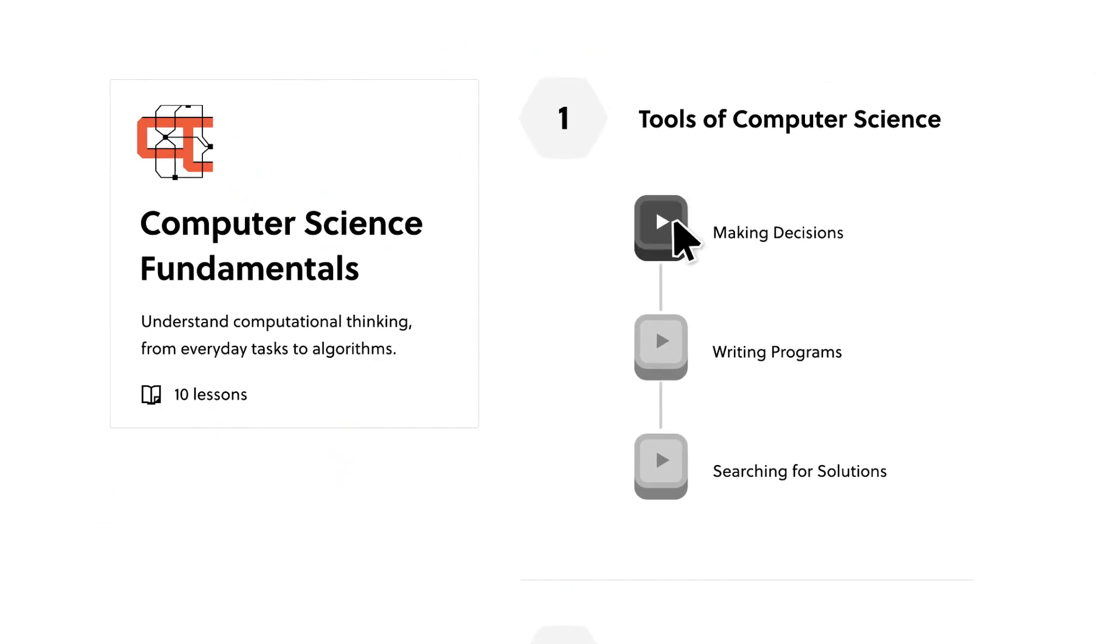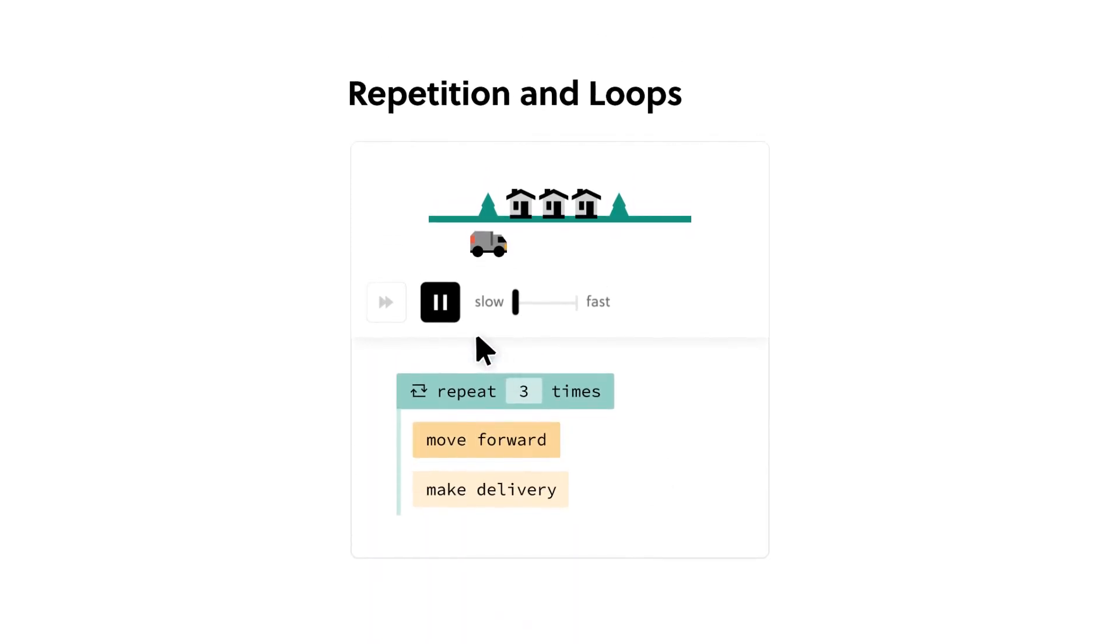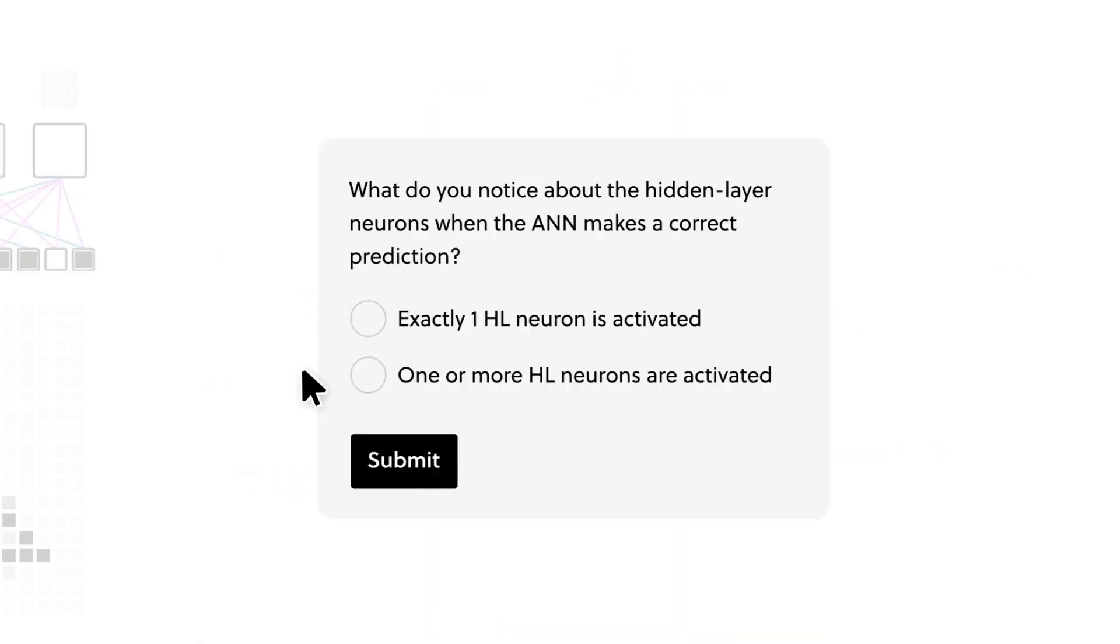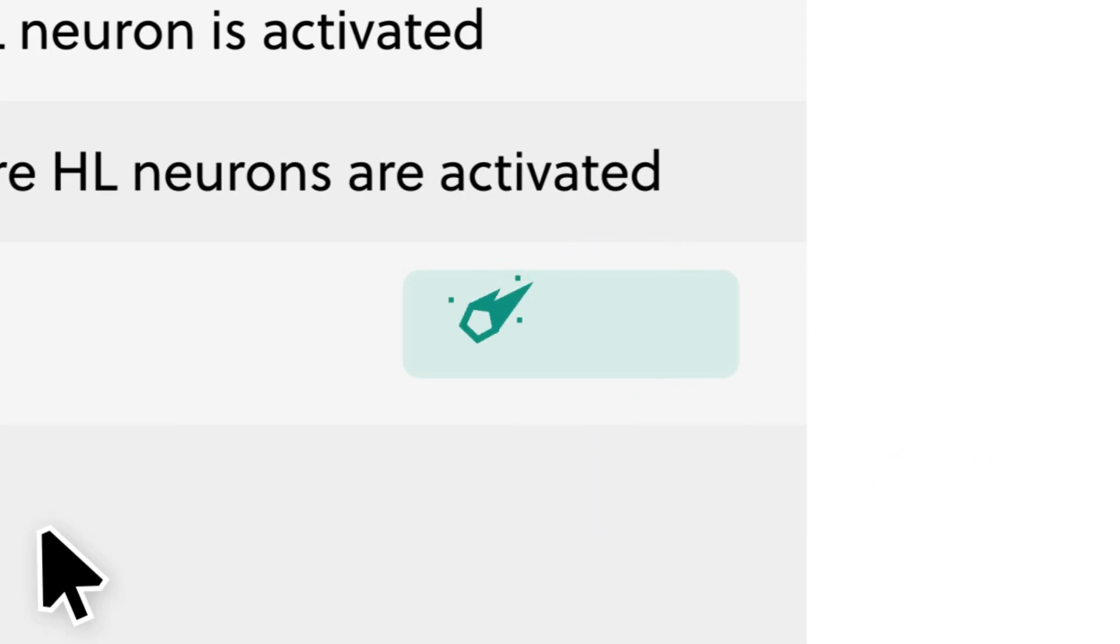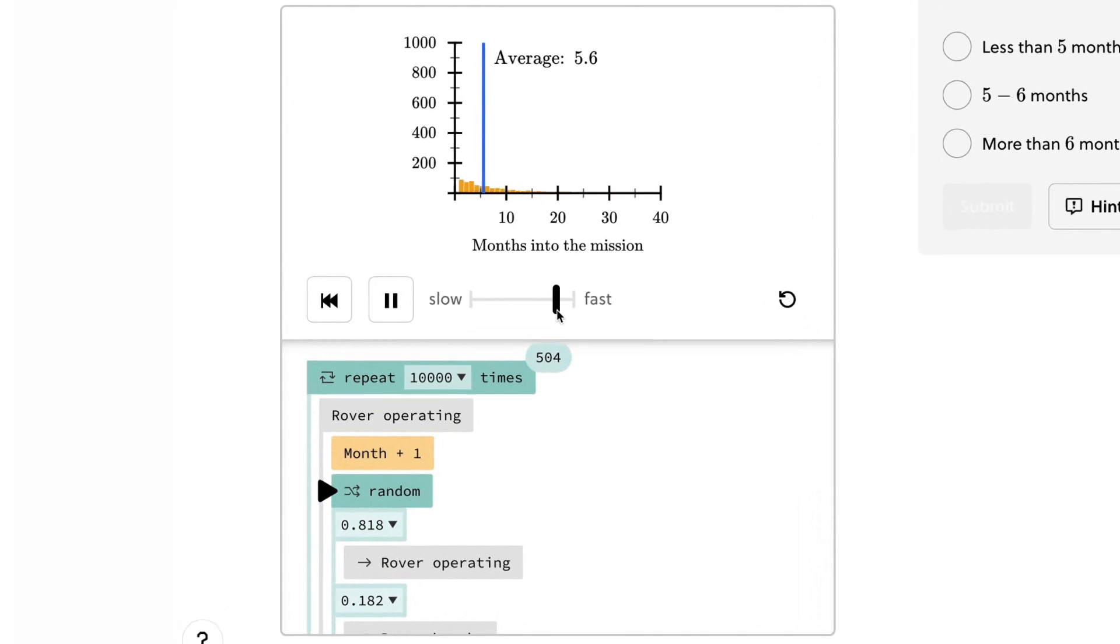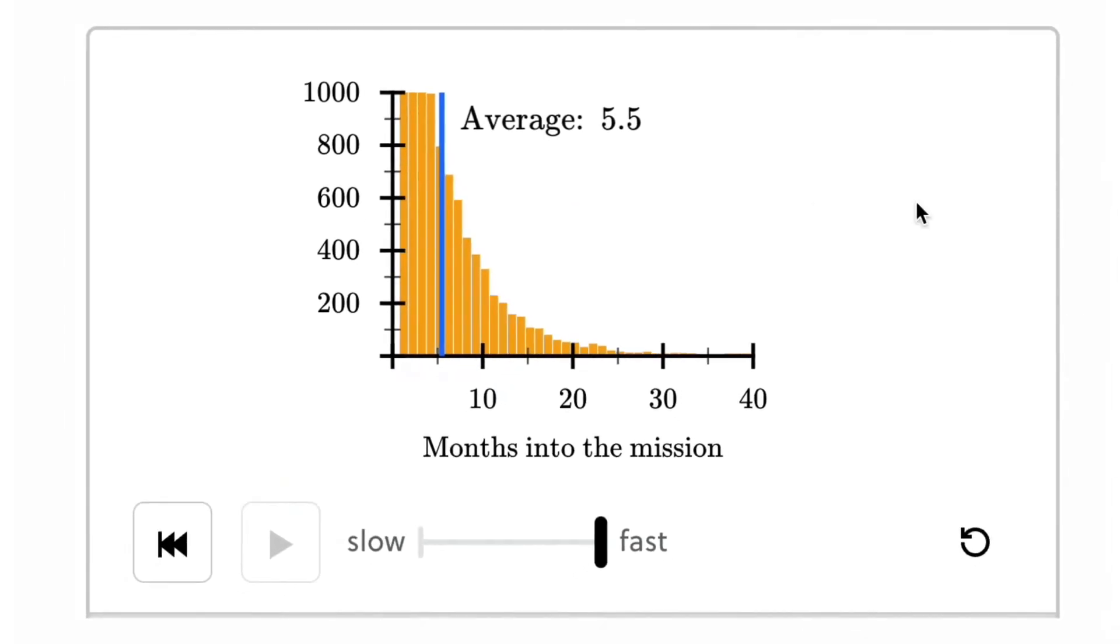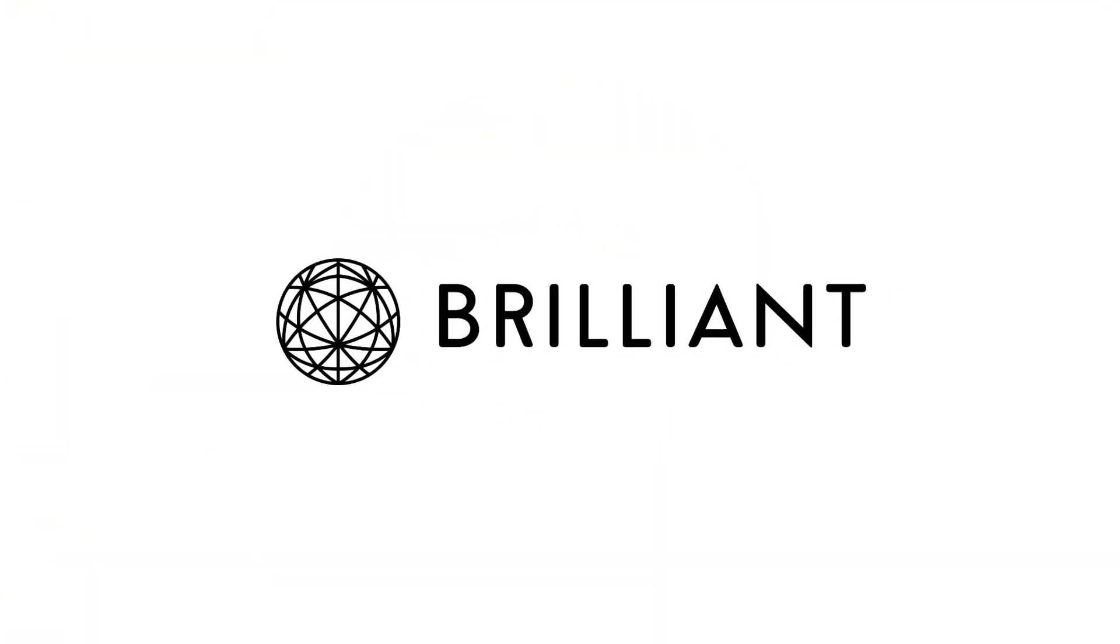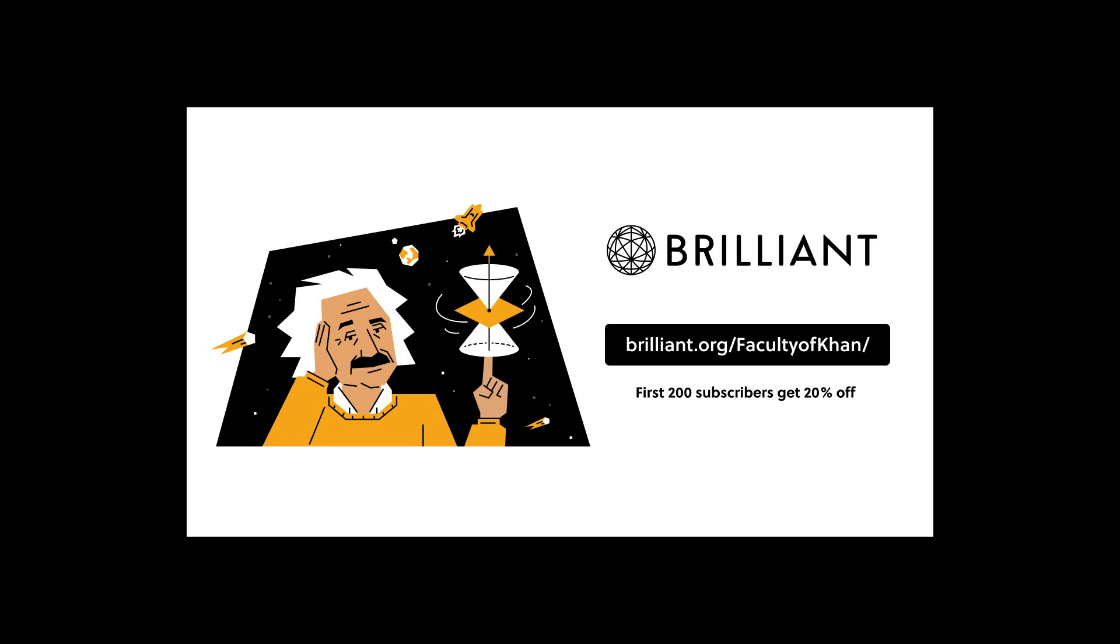The computer science courses, particularly the demonstrations on fundamentals and programming, have been personally quite useful in helping me nail down those concepts in an interactive and concise way. The lessons on Brilliant are an excellent tool overall for lifelong learning in a fun and interactive fashion, while also balancing the demands of a busy schedule. To try everything Brilliant has to offer free for a full 30 days, visit brilliant.org slash faculty of khan, or click on the link in the video's description. The first 200 people that sign up will get 20% off Brilliant's annual premium subscription.